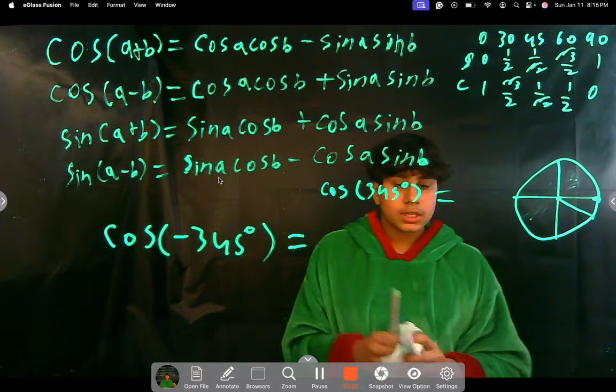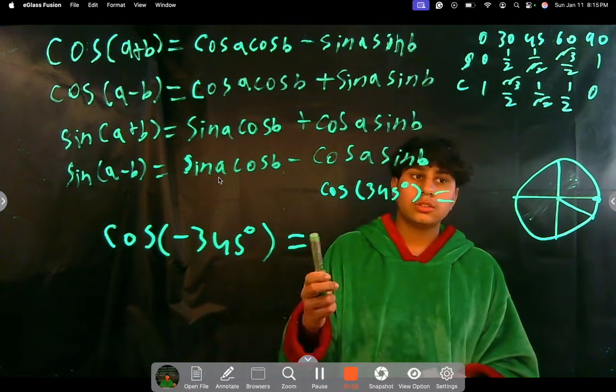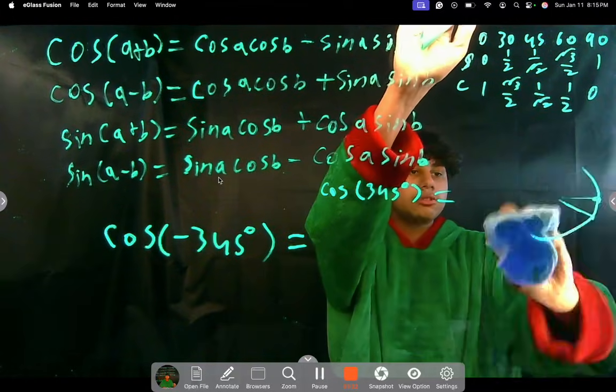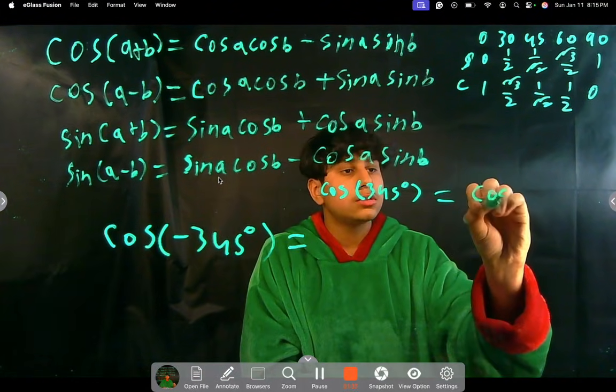So using reference angles, what do we know about when it's in the fourth quadrant? Well, we just do 2 pi, which is 360, minus that angle. So it'll be 360 minus 345, which is 15, cosine of 15.